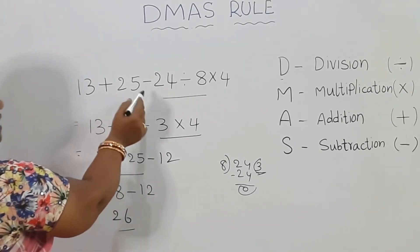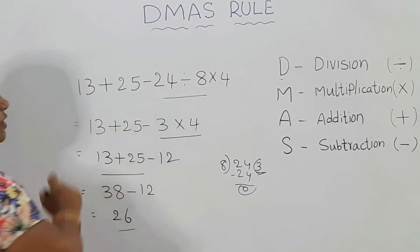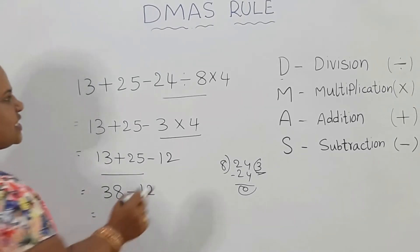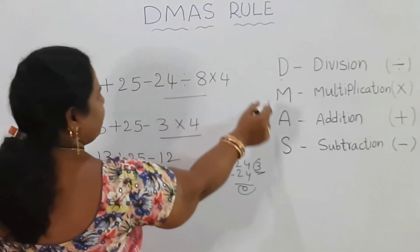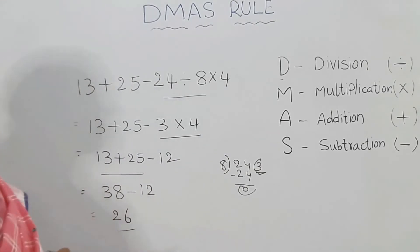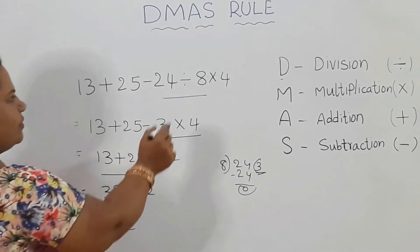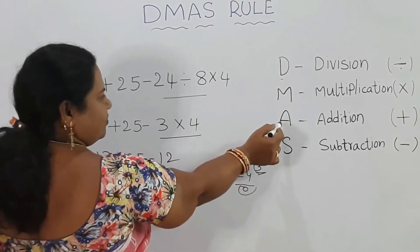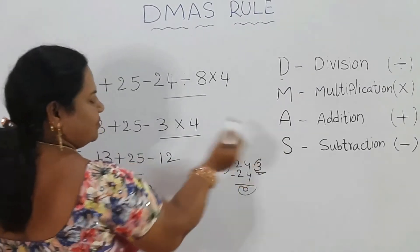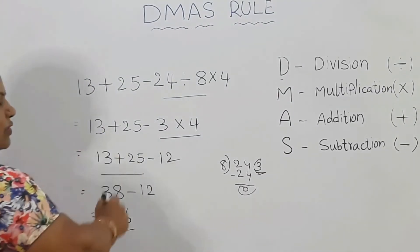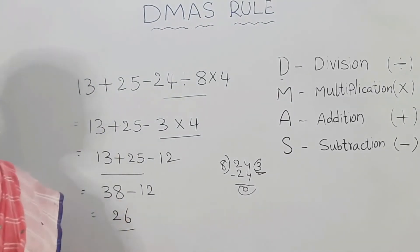So here when we have plus, minus, divide, and multiply mixed together, we apply the DMAS rule: first division, then multiplication, then addition, then subtraction.